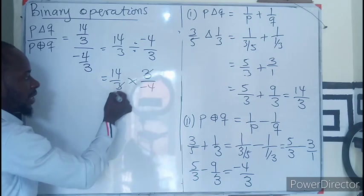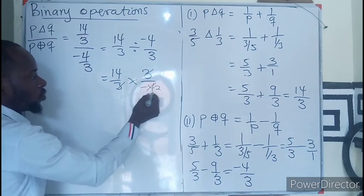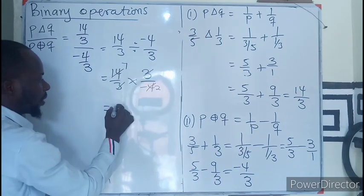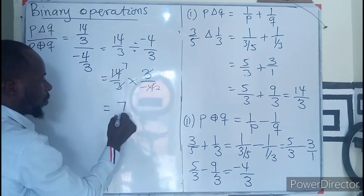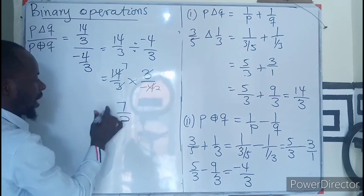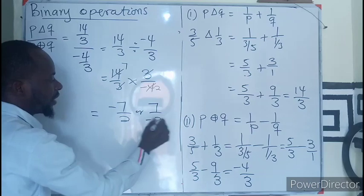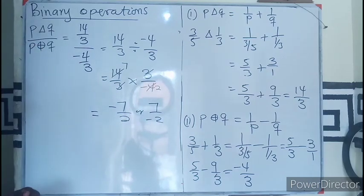We know this will cancel. 2 can go into 4 two times, it goes into 14 seven times. So I'll be left with 7 over 2, either negative 7 over 2 or 7 over negative 2. It means the same answer.